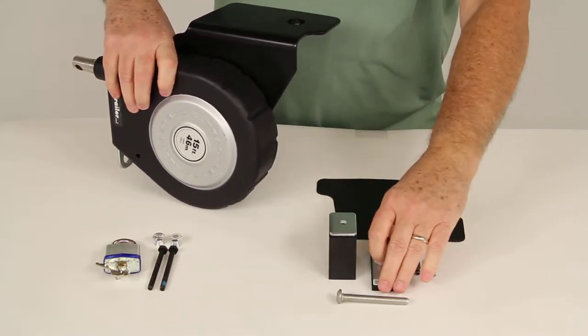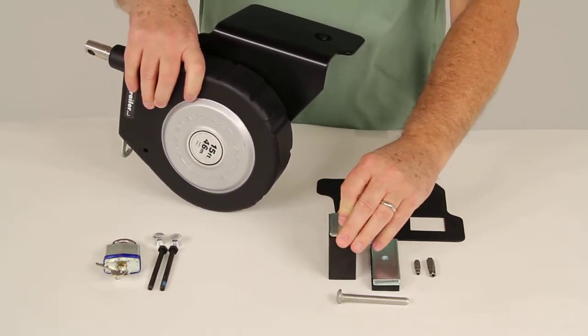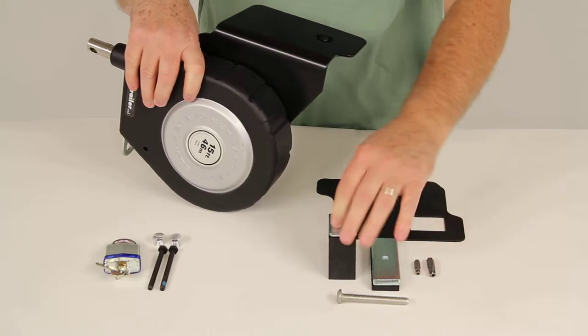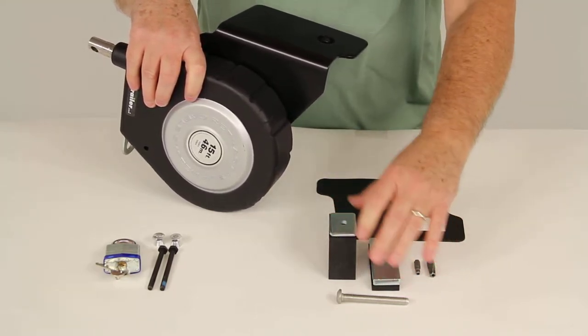That's why they have the two different blocks here. Basically it just depends on the size of your stake bed pocket in your truck. These two would give you the option to give you a perfect fit in your stake pocket of your truck.